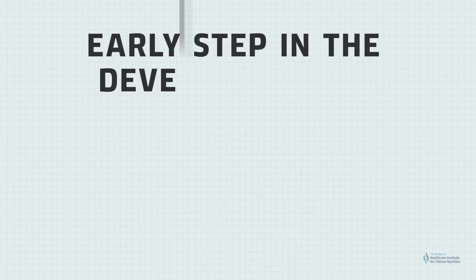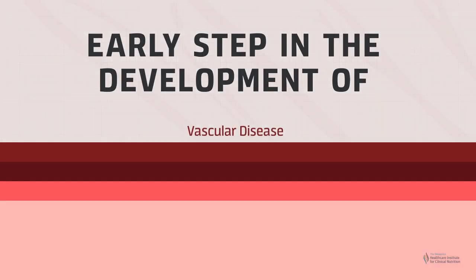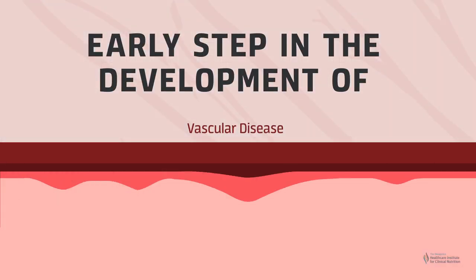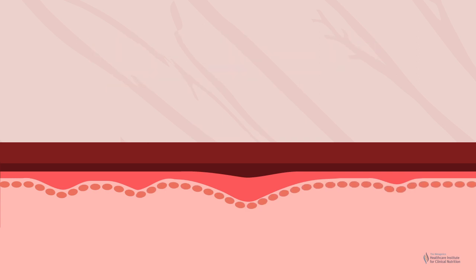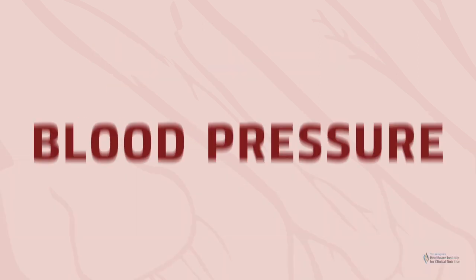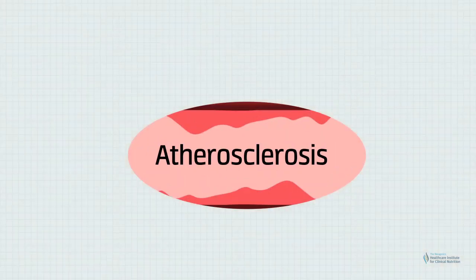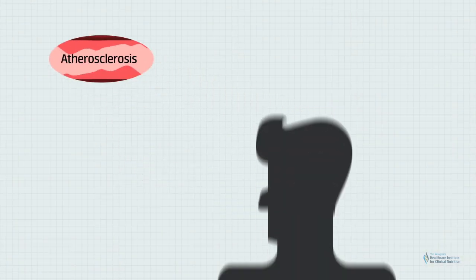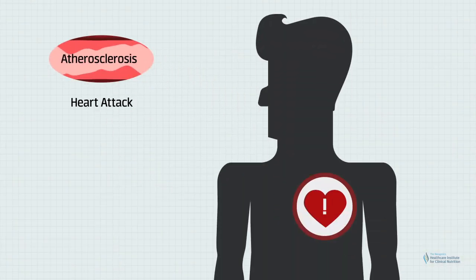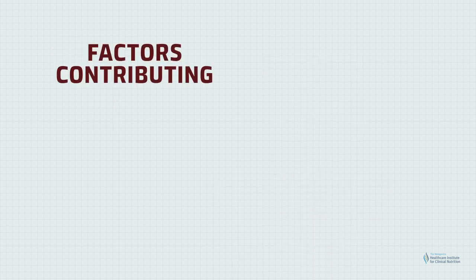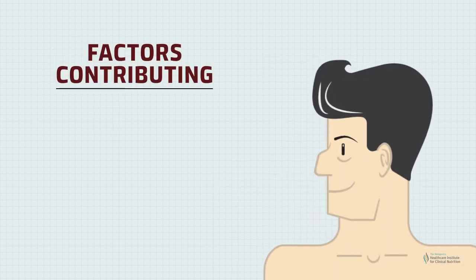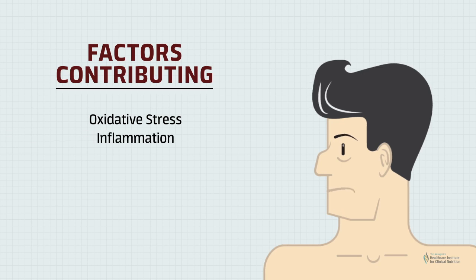Endothelial dysfunction is an early step in the development of vascular disease and decreases the suppleness of arteries, leading to increased blood pressure. It impacts platelet aggregation and how immune cells interact with the vessel wall, and may also contribute to atherosclerosis and progression to heart attack and stroke.